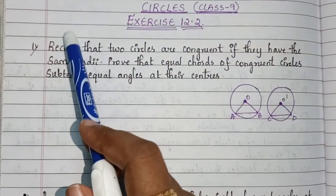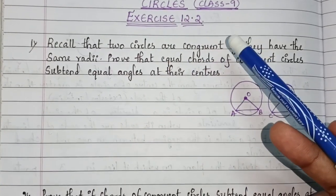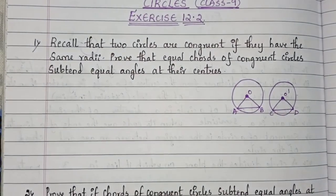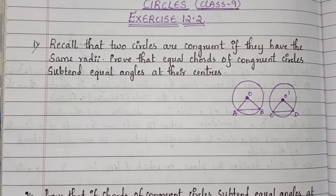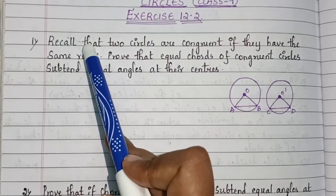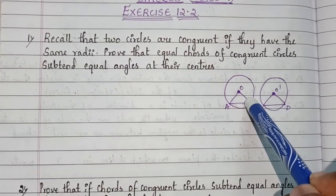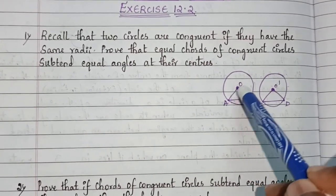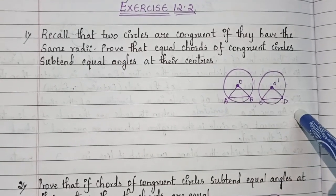They have given us: recall that two circles are congruent. Congruent figures are those which have the same size and same shape. Two circles are congruent if they have the same radii — that is, OA equals O'C and OB equals O'D.